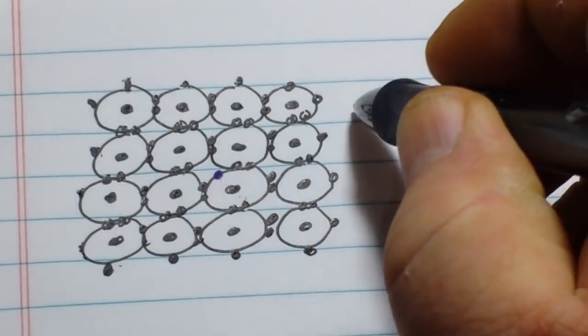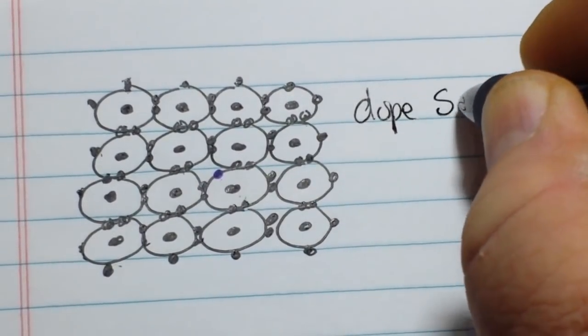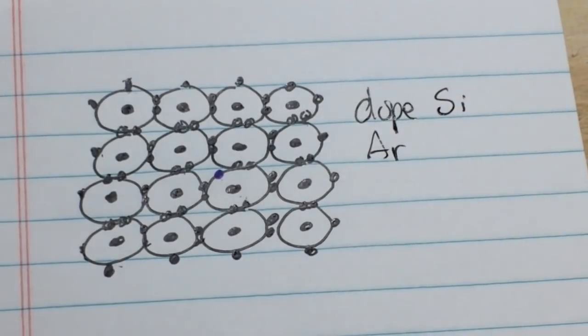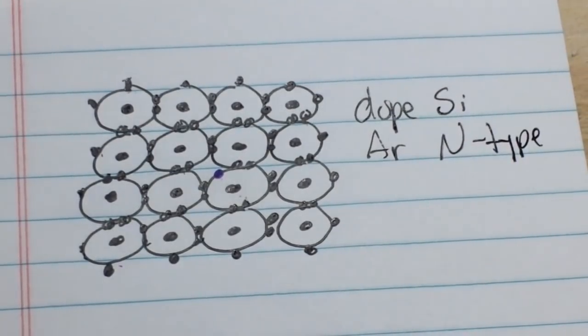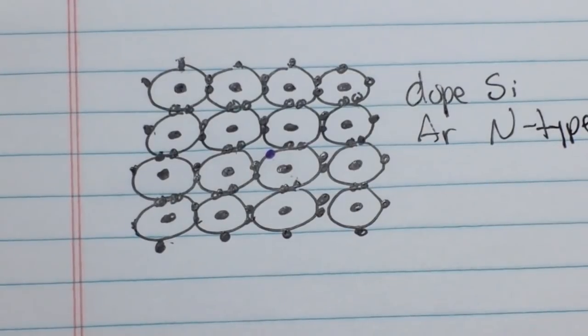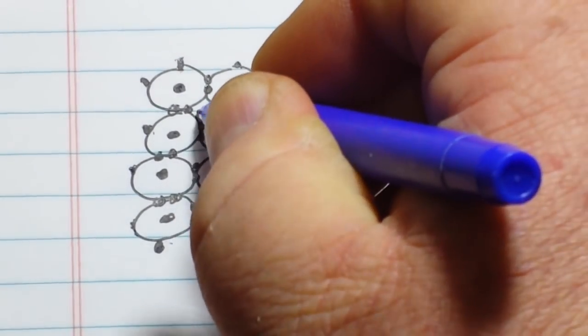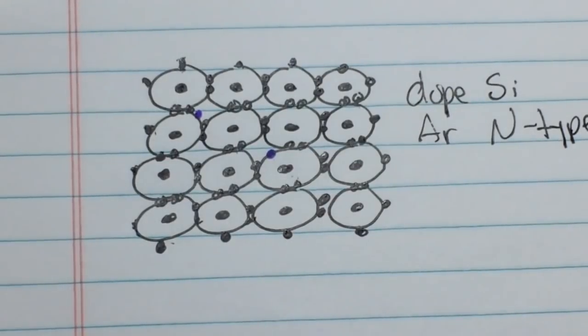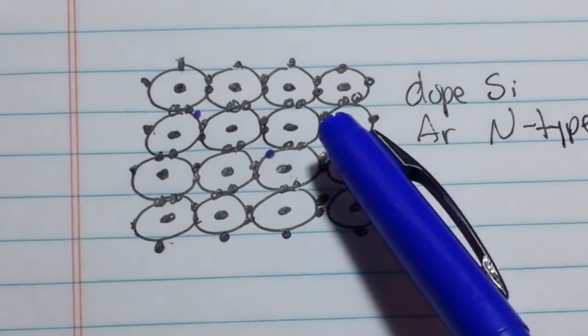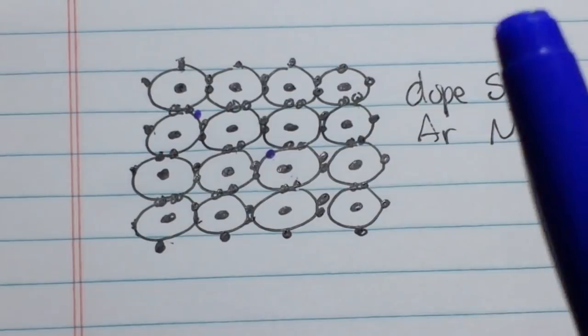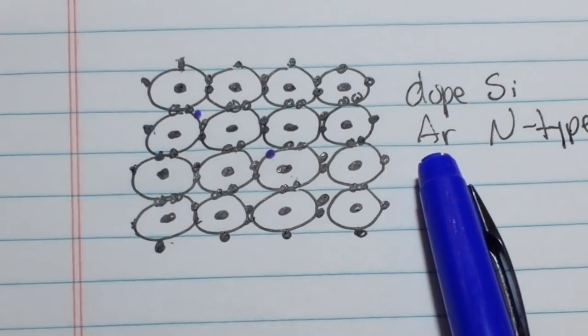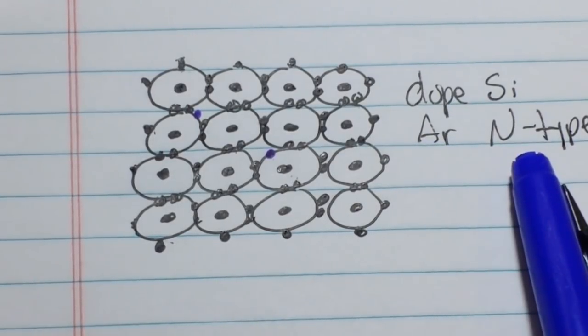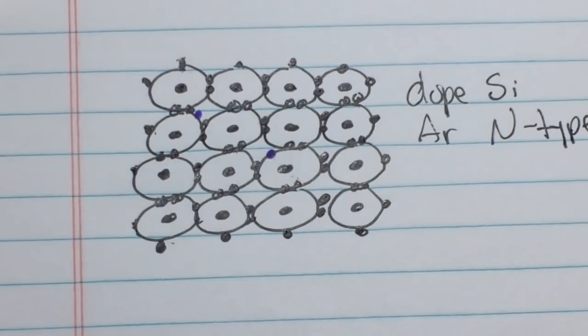So when we dope our silicon with arsenic, we are creating an N-type material. And it doesn't take much at all. You just throw in a couple atoms of arsenic into the mix, and now you have enough free electrons flowing around here that they can conduct a current. So you have taken your silicon insulator, added a small bit of arsenic, and created an N-type semiconductor. Pretty cool.